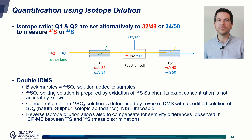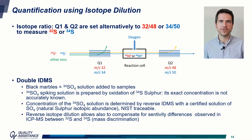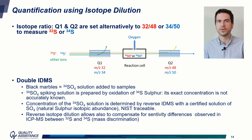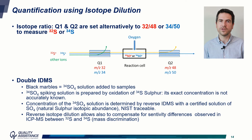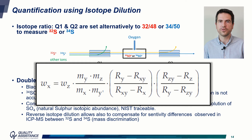Our approach was more complicated than the marble analogy suggests. When adding sulfate containing sulfur-34 to the sample, there is no certified solution available, so we had to prepare this solution by oxidation of sulfur-34 as a certified sample. The concentration of the sulfate solution obtained was determined by reversed isotope dilution mass spectrometry with a certified solution of sulfate. This is called double isotope dilution mass spectrometry, and the quite complex equation for the quantification of sulfur in the sample is shown here.